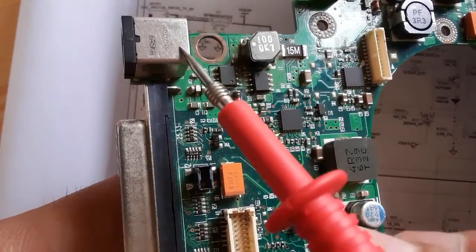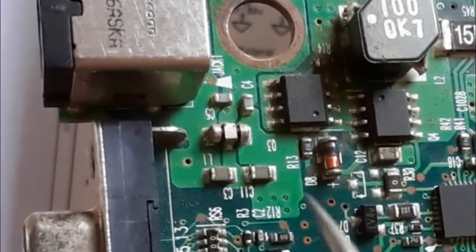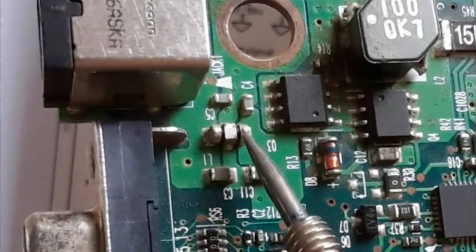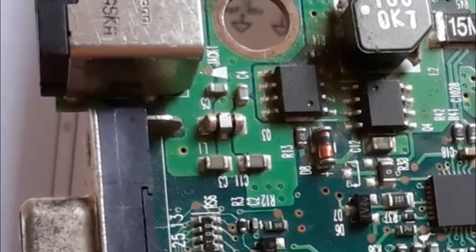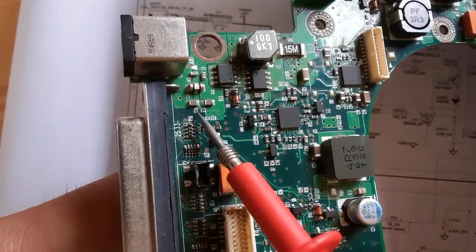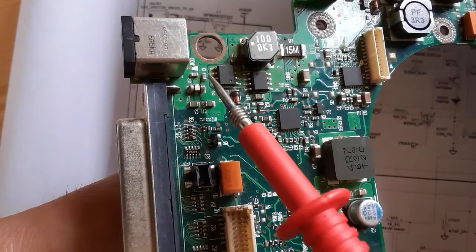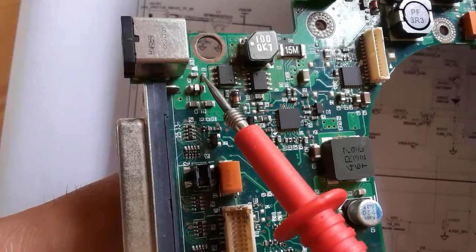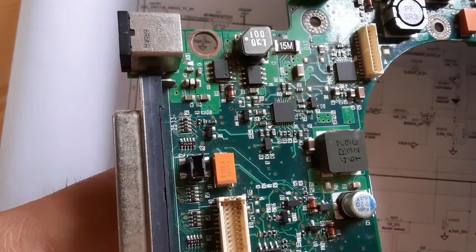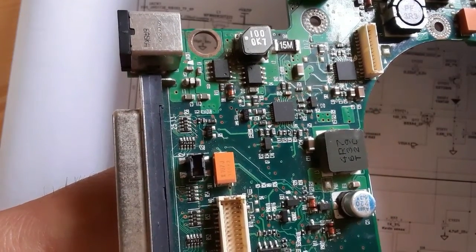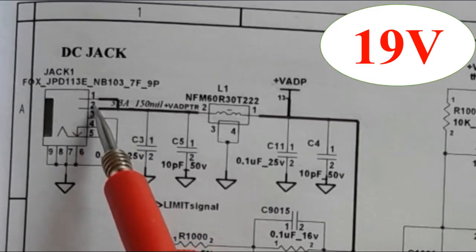Near the power jack on the motherboard, you can see the inductor and the capacitors. The inductor has reference L and the capacitor has reference C. We have four capacitors and one inductor, the same as shown in the schematic.